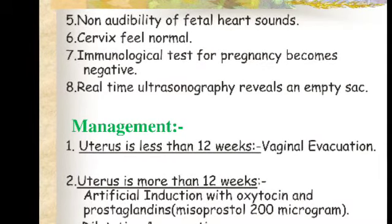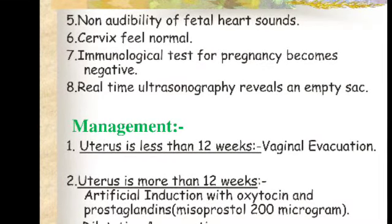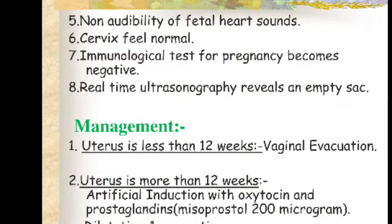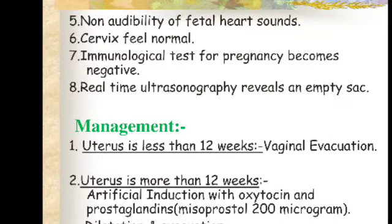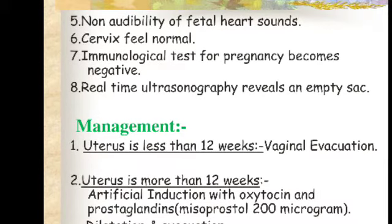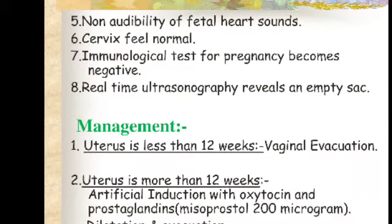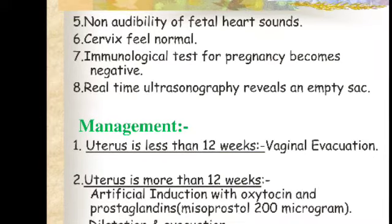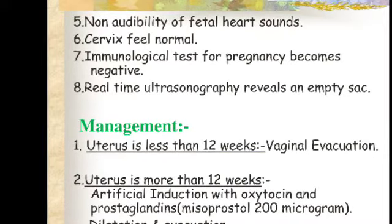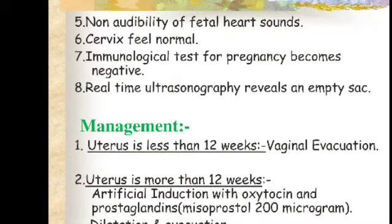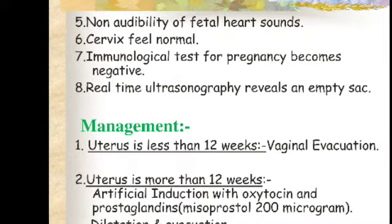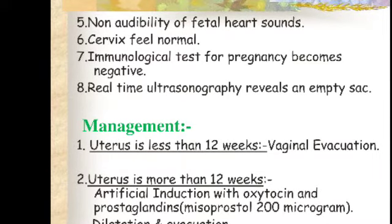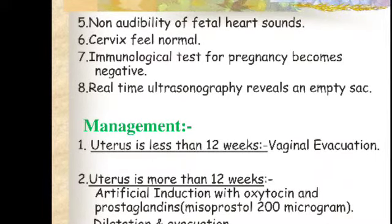In management: if the uterus is less than 12 weeks, vaginal evacuation is done. If the uterus is more than 12 weeks, artificial induction is performed with oxytocin and prostaglandin — misoprostol 200 micrograms — and dilatation and evacuation procedure is carried out to remove the missed products.